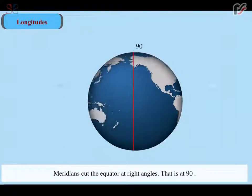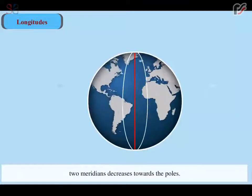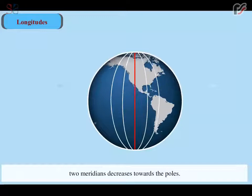That is, at 90 degree. Meridians are semi-circles. The distance between any two meridians decreases towards the poles.